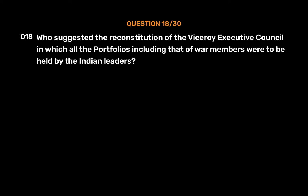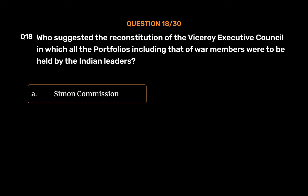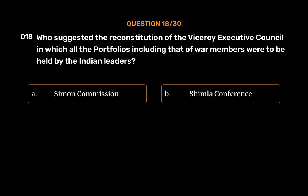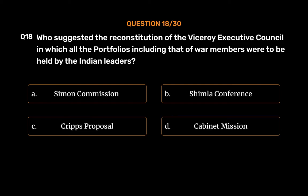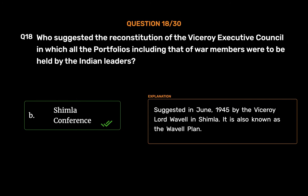Question No. 18. Who suggested the reconstitution of the Viceroy Executive Council in which all the portfolios including that of war members were to be held by Indian leaders? Option A, Simon Commission; Option B, Shimla Conference; Option C, Cripps Proposal; Option D, Cabinet Mission. The correct answer is Option B, Shimla Conference. Suggested in June 1945 by the Viceroy Lord Wavell in Shimla, it is also known as the Wavell Plan.